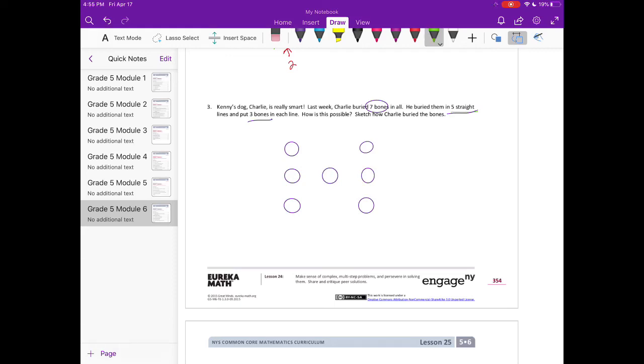And then we need to go diagonal, so we have four, and then lastly five. So that is where the five straight lines with three bones in each line will come from.